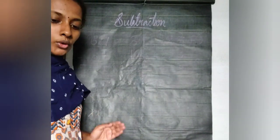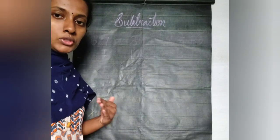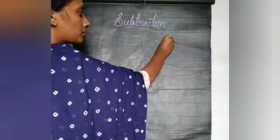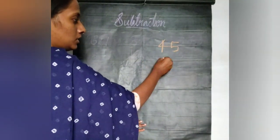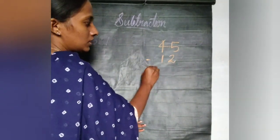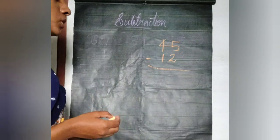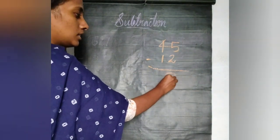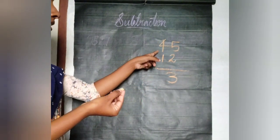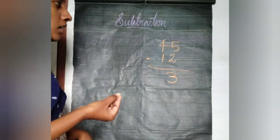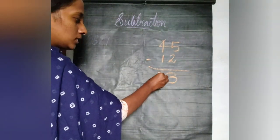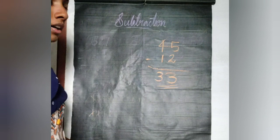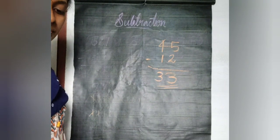We have to do 45 minus 12. First, in the position of ones we have 5 and 2, we have to do 5 minus 2, that is 3. Next, in the position of tens, we have 4 and 1 — 4 minus 1 is 3. So we get 33. That's why Tina has 33 dolls.